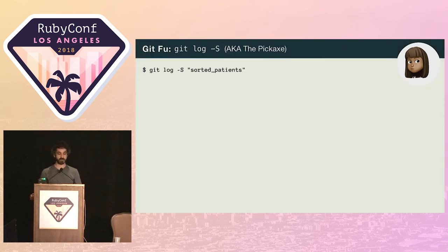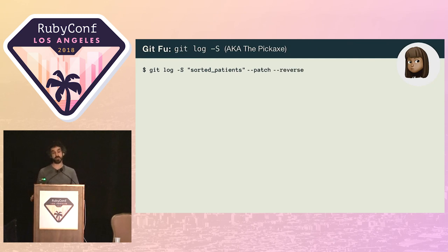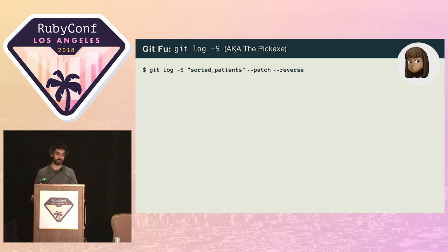She calls the command with the method name as a search parameter, again including the patch option so she can see the full diff. She also includes the reverse option. This way, Git will return the commits in reverse chronological order, and she'll see the first commit that used sorted_patients right at the top. Hopefully this will finally solve the mystery. She runs the command and inspects the output.